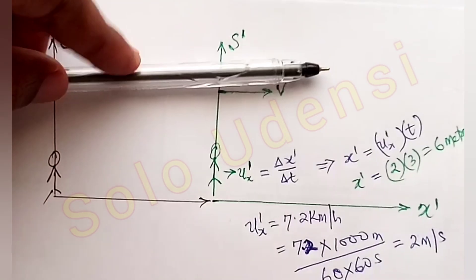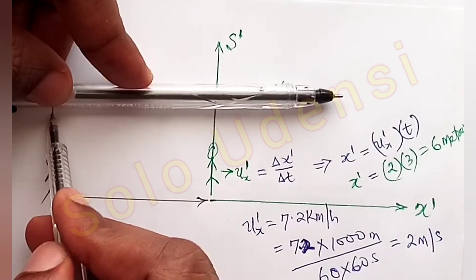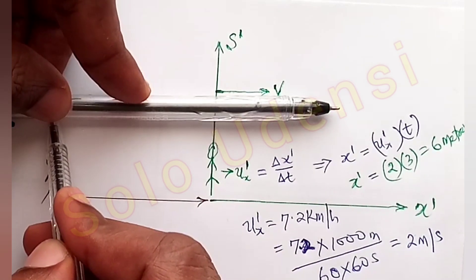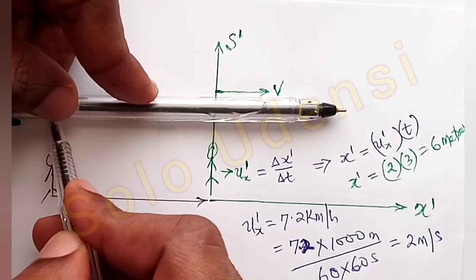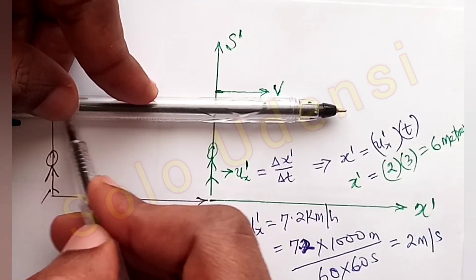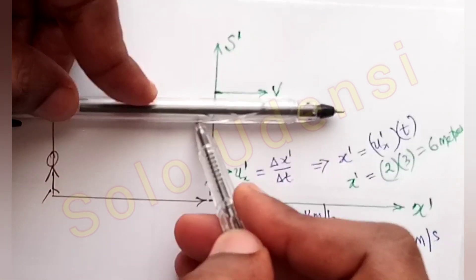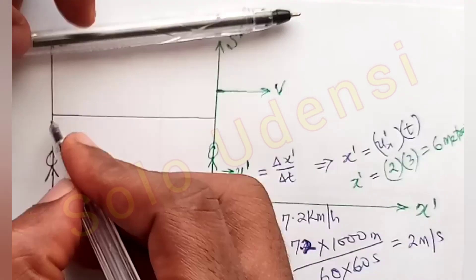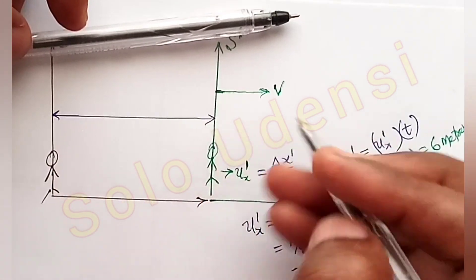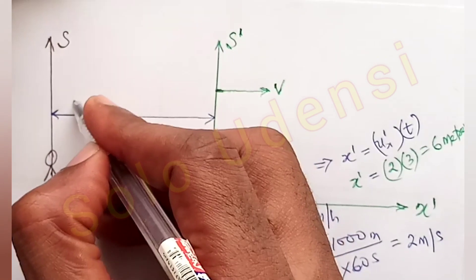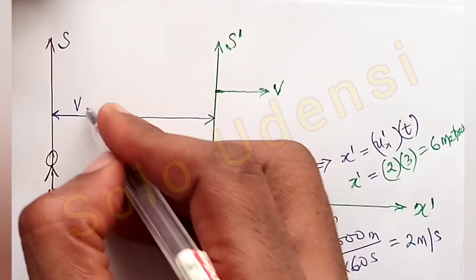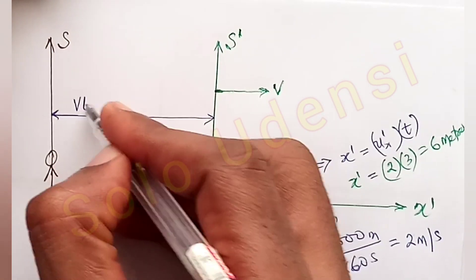Also, the bus which was here, when they started their clocks at the same time, the bus moved this way. So after 3 seconds, the bus has traveled velocity times time.